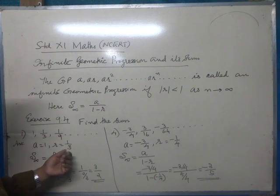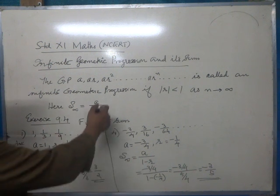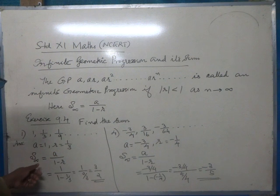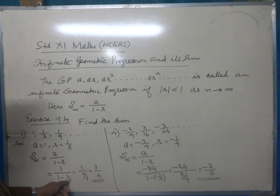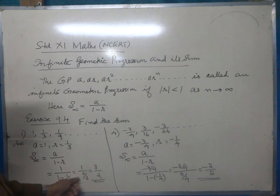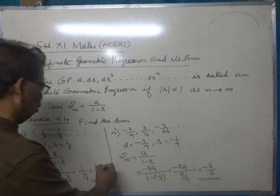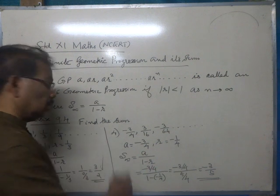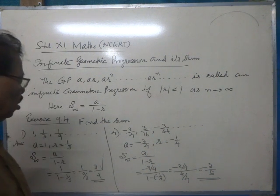Therefore the common ratio is 1/3. Using the formula S-infinity = a divided by (1 - r), we get 1 divided by (1 - 1/3), which is 1 divided by 2/3, equal to 3/2. The sum to infinity is 3/2.